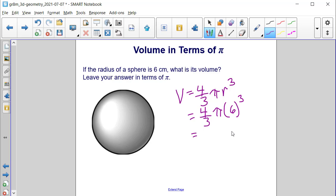If we cube 6, we will get 216. We still have pi.